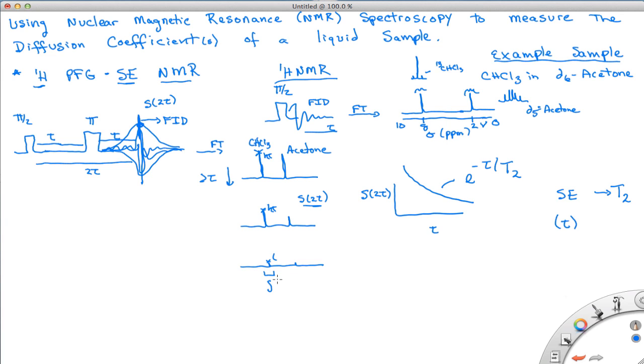Or by integrating over a specific area here and taking the area, the integrated area, and how it decreases. Both are directly proportional to the signal, the direct signal at 2 tau. The first, using the height, assumes that the width of these peaks remains constant throughout the experiment. The integrated area is a more accurate way to do this.